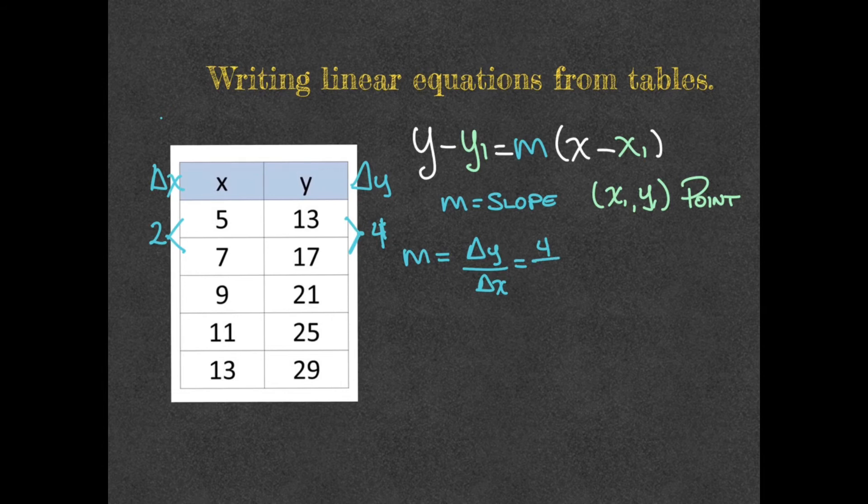So the change of y, 4, over the change of x, which is a 2, gives me 2. So now I'm certain that m equals 2.